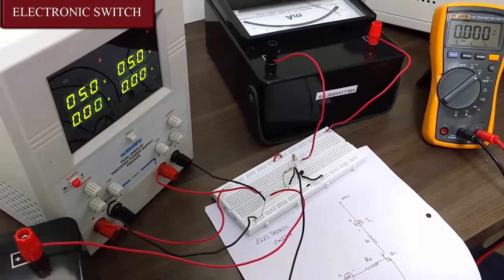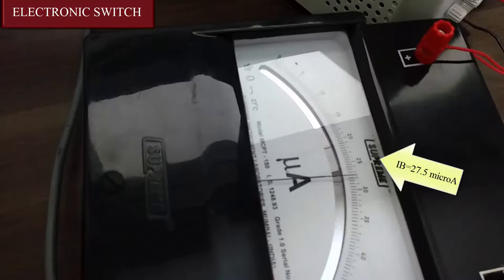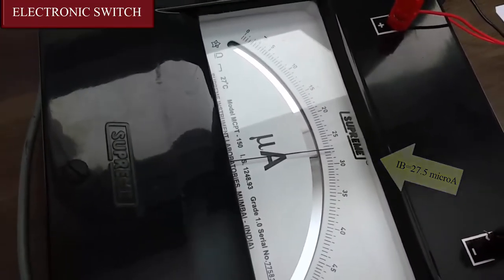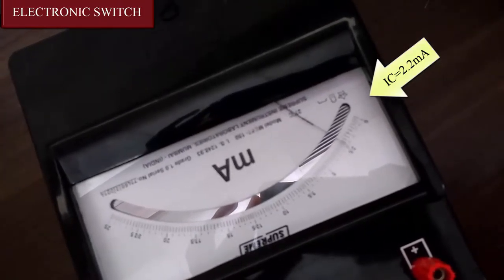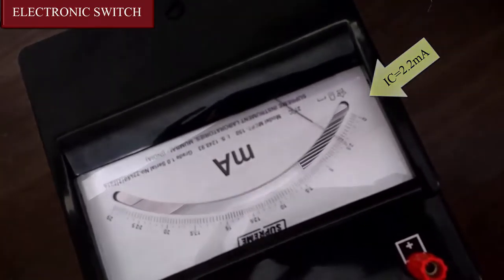We can see the current IB. We are getting a value of 27.5 micro amps. And we can see that IC current is 2.25 milli amperes.